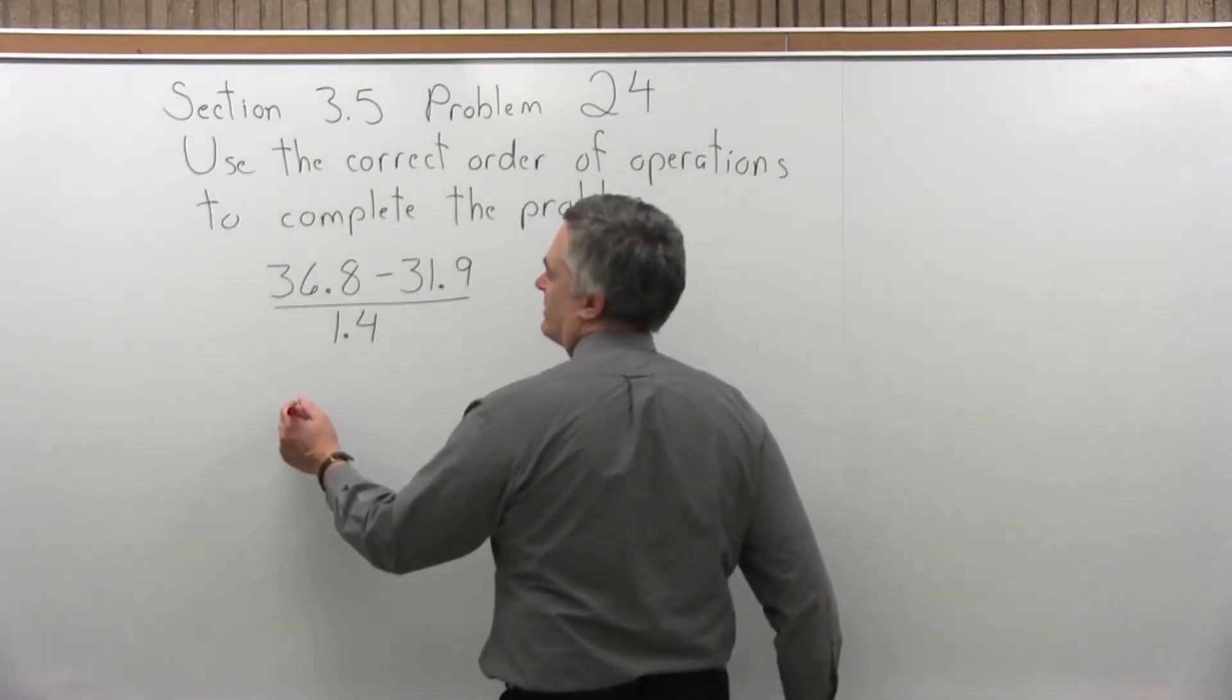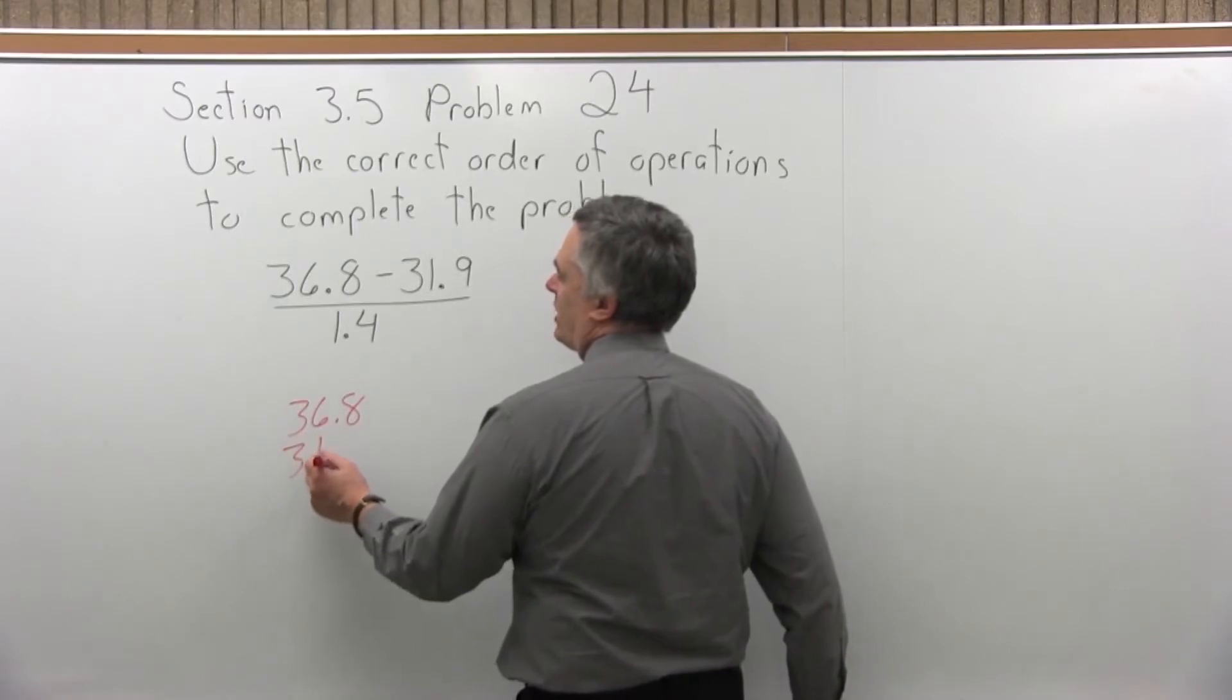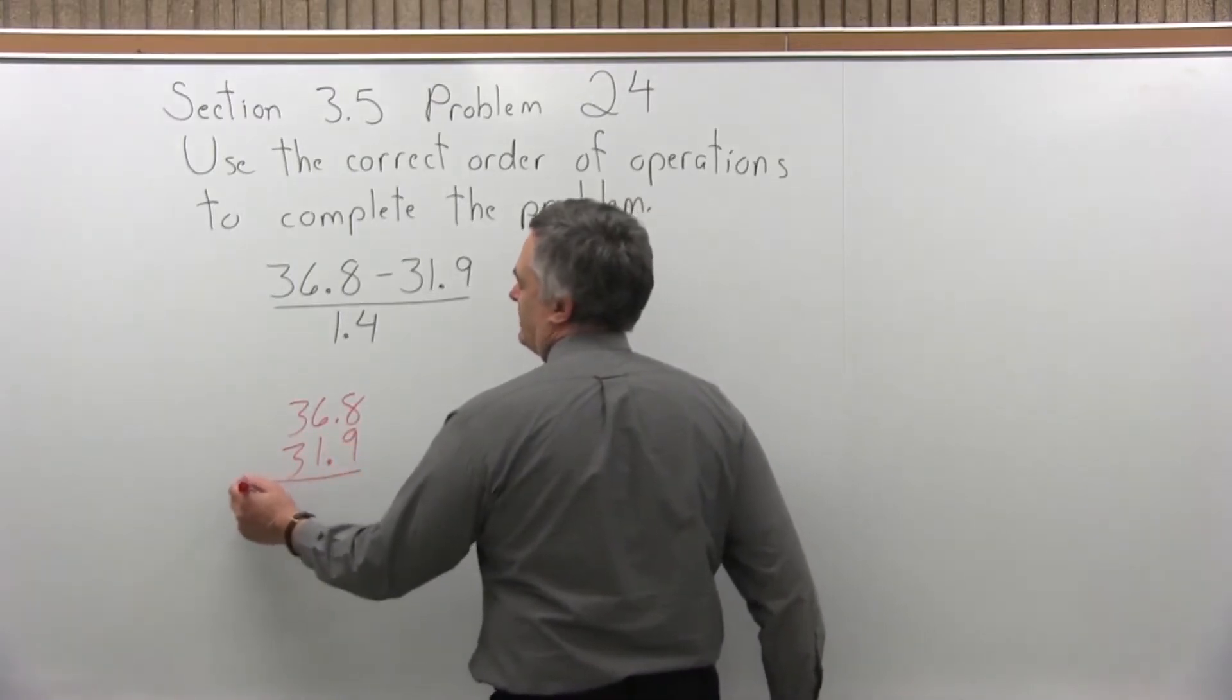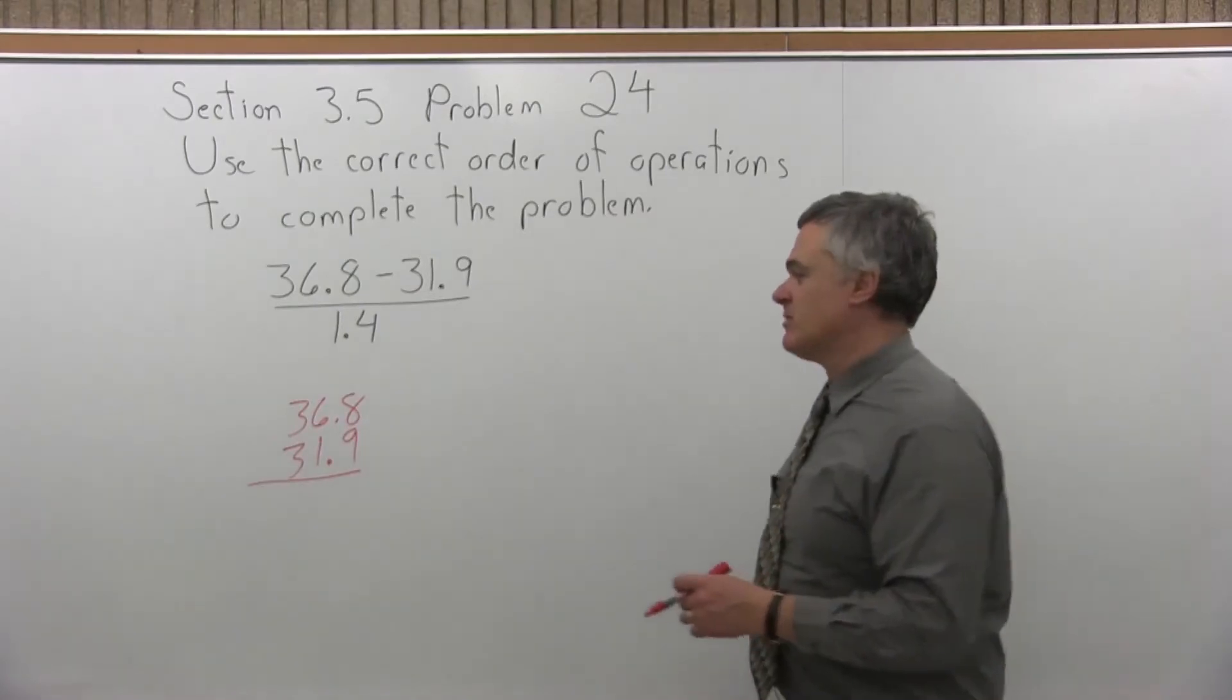I can write it out underneath here, 36.8 minus 31.9. So we want the decimals to line up. They do. If they didn't, we would have to make them line up.